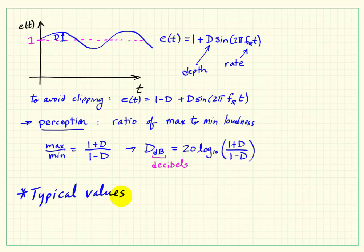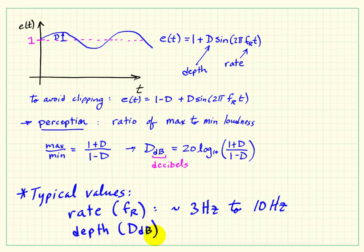Typical values for the tremolo effect in terms of the rate would be anywhere from about 3 hertz to 10 hertz. Recall that the lower limit of hearing a sinusoid as an actual tone would be somewhere around 20 hertz. So this is slow enough that we can actually hear the individual cycles.